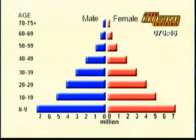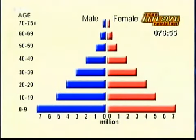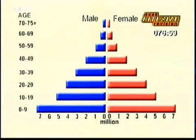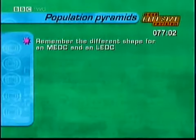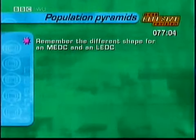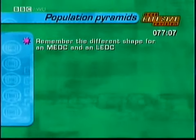A population pyramid is a type of graph. It's actually two bar charts standing back to back that shows the relative ages and makeup of a population. From them you can see how young or old a population is and how many are male or female. Watch the next clip and look out for the shape of a population pyramid for an MEDC and an LEDC.